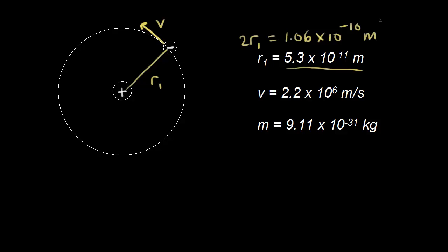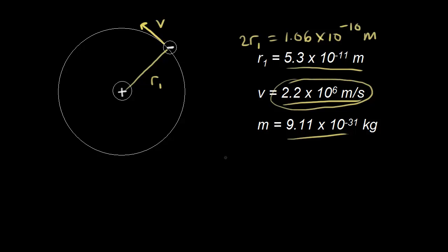We can also calculate the velocity of an electron in the ground state of the hydrogen atom using the Bohr model — 2.2 times 10 to the 6 meters per second. Since we know the mass of an electron, we can calculate the linear momentum: p equals mass times velocity. Let's say we know the velocity with a 10% uncertainty, which as a decimal is 0.1.